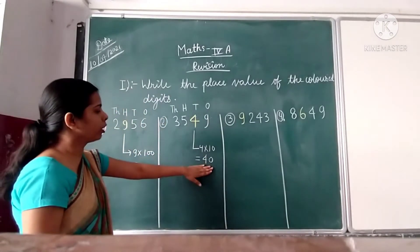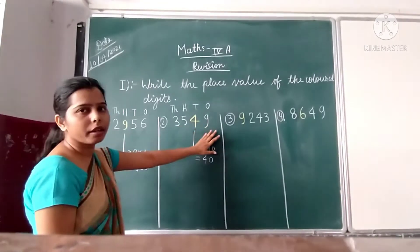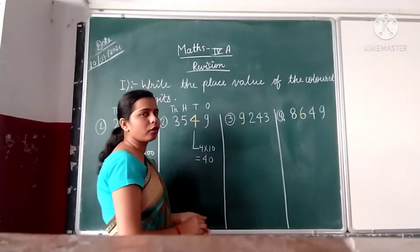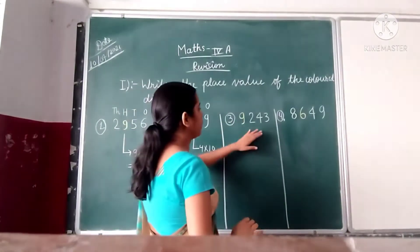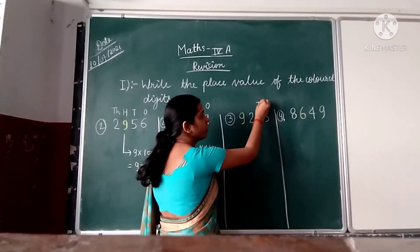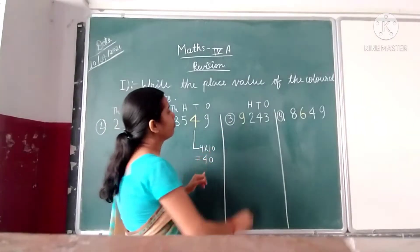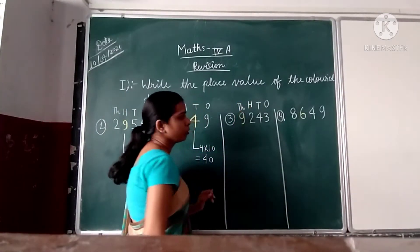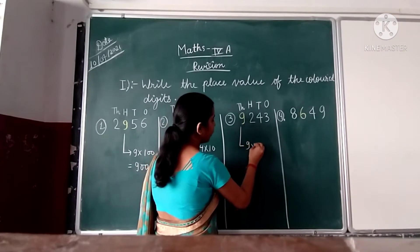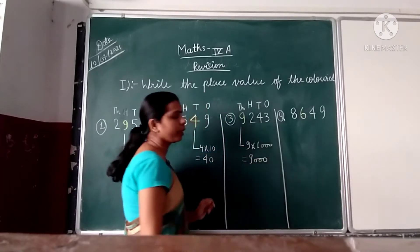40 is the place value of digit 4 in 3549. In the next question: 9243. We have to find the place value of digit 9. In this question, 3 represents the value of 1, 4 represents the value of 10, 2 represents the value of 100, and 9 represents the value of 1000. So the place value of 9 is 9 into 1000 equals 9000.